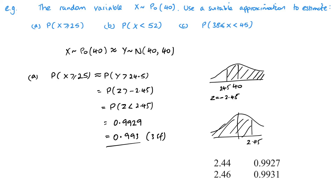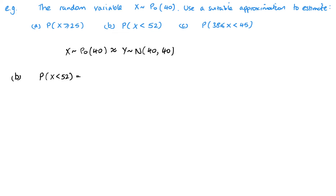Looking this up in the tables, the value 0.245 falls exactly between two entries, giving us 0.9929. So our answer is 0.9929 to three significant figures. If you check in the calculator using the Poisson distribution, you'd actually get 0.996 — a slight variation, but still a pretty good approximation.